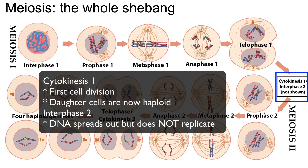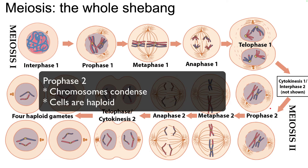That moves us to prophase two, where the chromosomes once again condense. Note that whereas there were four chromosomes in prophase one, there are only two in this cell in prophase two. We've gone from diploid over here to haploid over here — that's one of the main transitions that occurs in meiosis one.